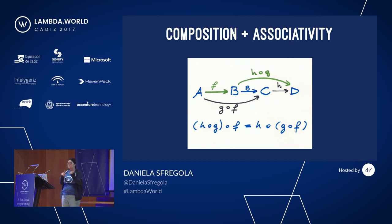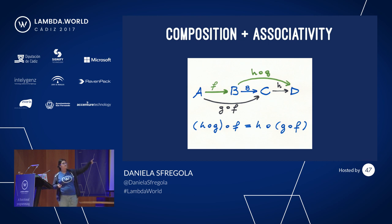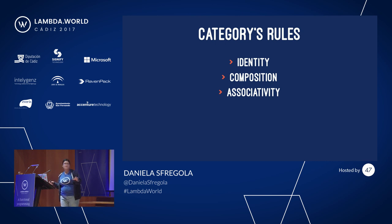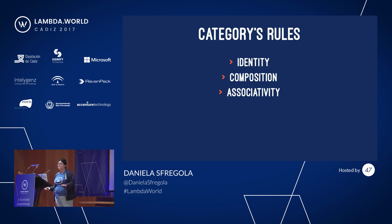The other law is that you need to have an identity — the opportunity to stay where you are. It does nothing: if you go through the identity and then use the function, it's the same as just using the function. Last rule: associativity. It just means we don't care about parentheses — the green path is the same as the black one. So: a category is a set of arrows that connects objects together with identity, composition, and associativity. If you don't have these rules, it's not a category.